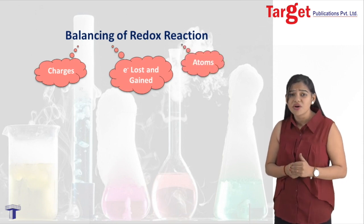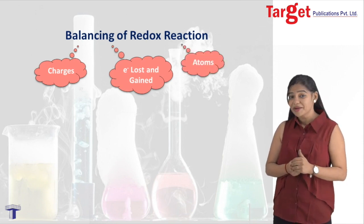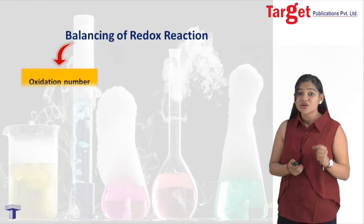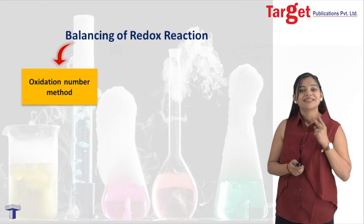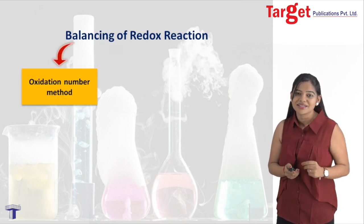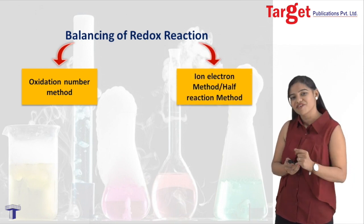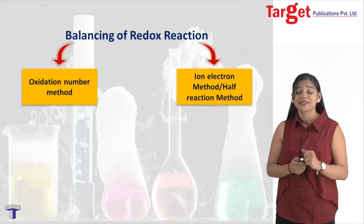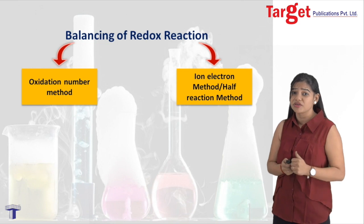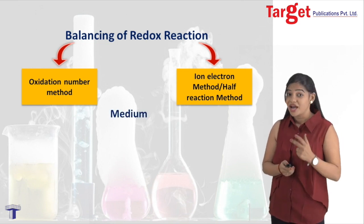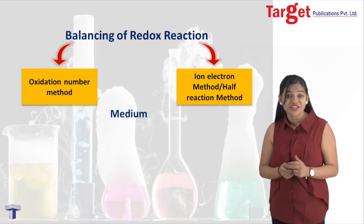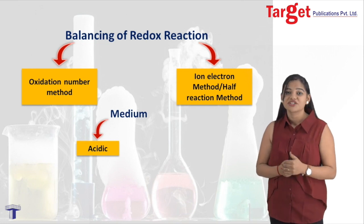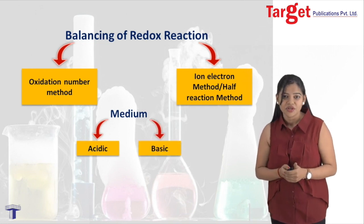A redox reaction can be balanced by two methods. The first method is the oxidation number method and the second method is the ion-electron or half-reaction method. These two methods can be carried out in two different mediums — either acidic medium or basic medium.